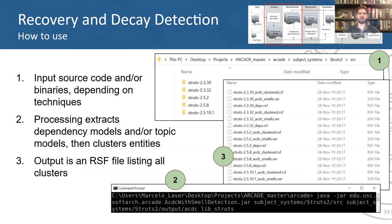Now, how does one execute recovery and decay detection in Arcade? Well, given the goal of Arcade of being a unified tool for running all five tasks of architectural analysis, we've combined recovery and decay detection into a single execution flow. First, the user provides a directory structure, including all versions of the system they wish to analyze, and for each version must provide the source code and compiled binaries, such as java.class files.